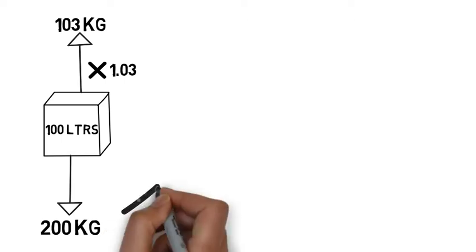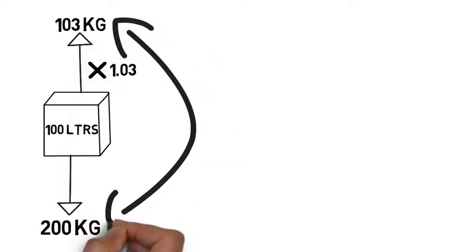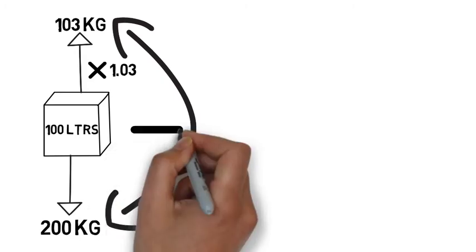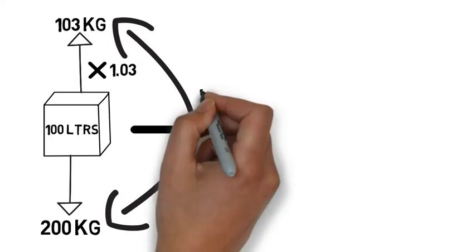What have we now got facing us? We can see the upward force is less than the downward force. It's negatively buoyant. By how much is it negatively buoyant? It's negative by 97 kilograms.